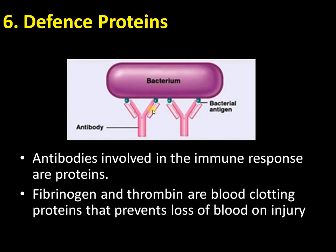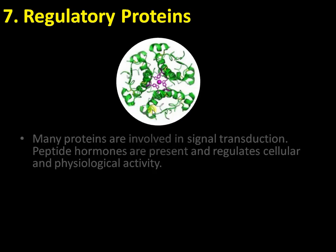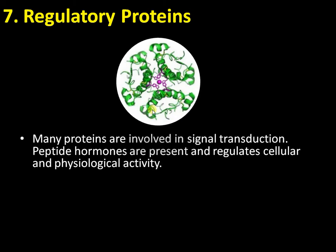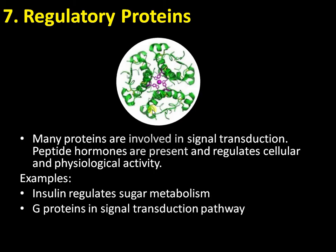There are also regulatory proteins. Many proteins are involved in signal transduction — peptide hormones, apart from lipid hormones, regulate many cellular and physiological activities. Insulin is a familiar example that regulates sugar metabolism. GTP-binding proteins are involved in signal transduction pathways and act as secondary messengers.